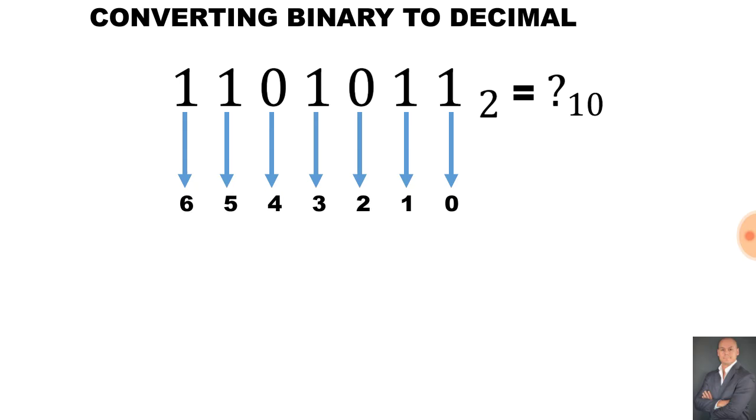Now what we do is because we're dealing with binary we will say 2 to the power of 0, 2 to the power of 1, 2 to the power of 2, 2 to the power of 3, 2 to the power of 4, 2 to the power of 5, and then 2 to the power of 6.